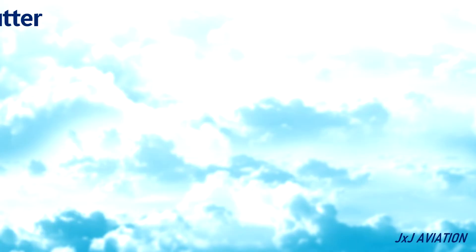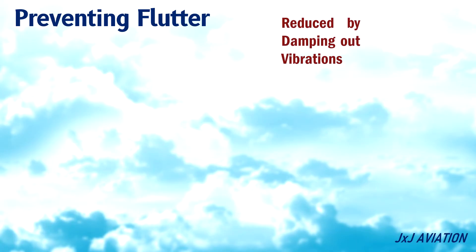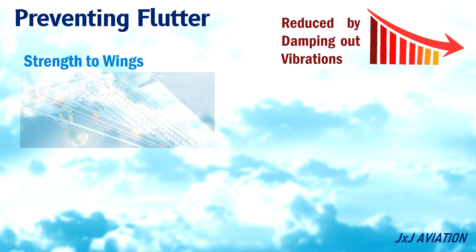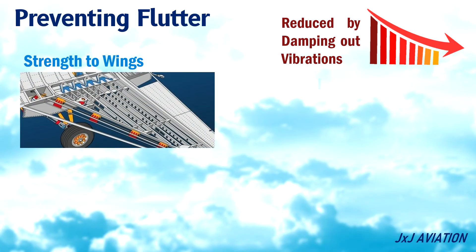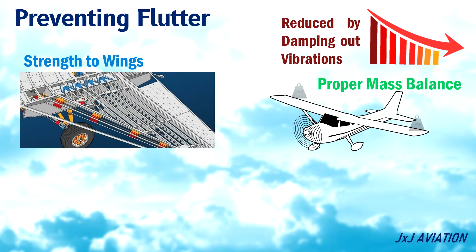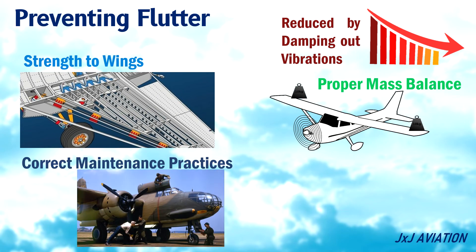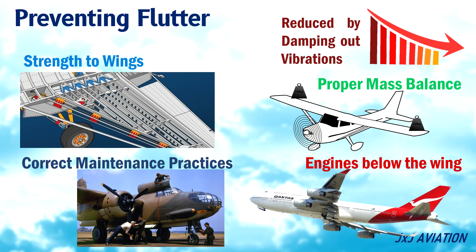Preventing flutter. Flutter cannot be avoided completely, but it can be reduced by damping out the vibrations. Providing sufficient strength to the wings and proper mass balance to the control surfaces are essential. Correct maintenance practices should be followed. Installing the engines below the wing also reduces the vibrations and prevents flutter.